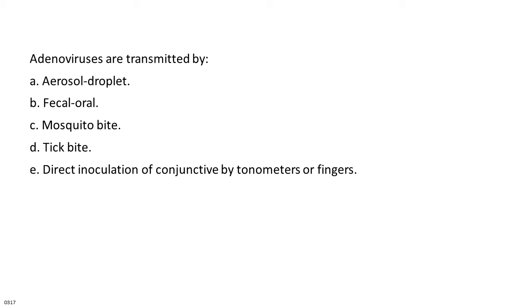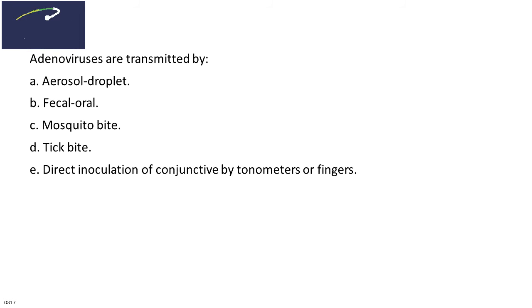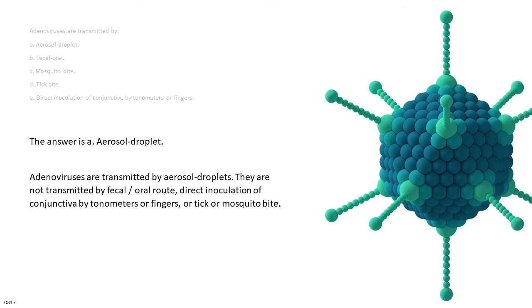Adenoviruses are transmitted by: A. Aerosol droplet. B. Fecal-oral route. C. Mosquito bite. D. Tick bite. E. Direct inoculation of conjunctiva by tonometers or fingers. The answer is A. Aerosol droplet. Adenoviruses are not transmitted by fecal-oral route, direct inoculation of conjunctiva by tonometers or fingers, or tick or mosquito bite.